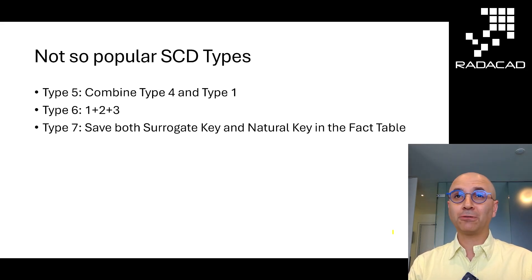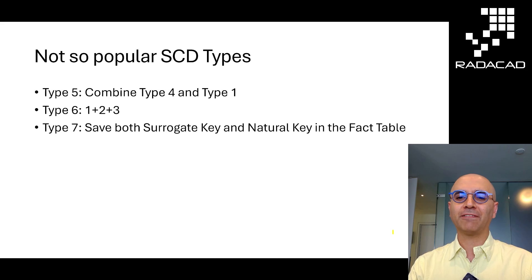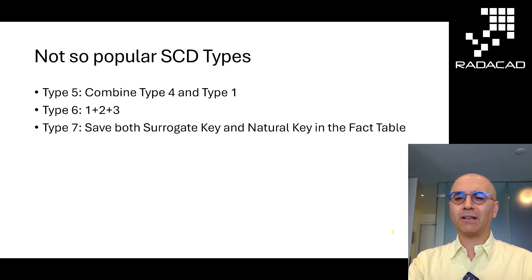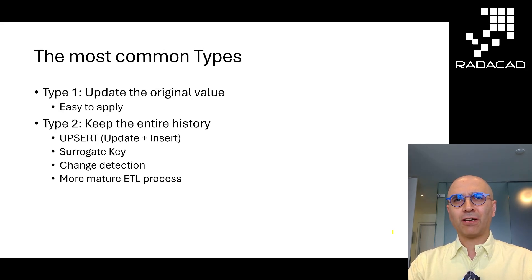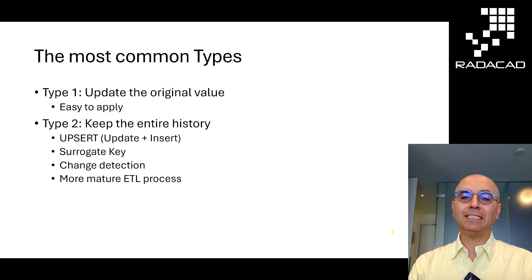Then there are three less popular SCD types. Type 5 combines Type 1 and Type 4. Type 6 combines Types 1, 2, and 3 — the plus of those numbers equals 6. Type 7 makes it a little easier to connect the fact table to the dimension table by using both the surrogate key and the natural key in the fact table. These types are for very specific scenarios and are therefore very rarely used. The most common types are Type 1 — which you may already be doing without knowing it — and Type 2, because it preserves the entire history and is easier than other history-preserving types, though it does still involve some process.